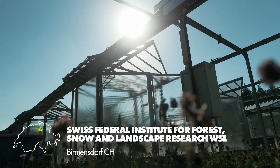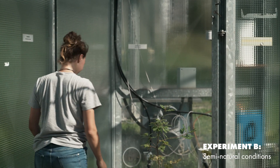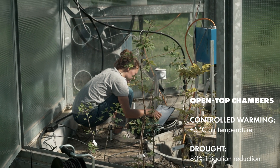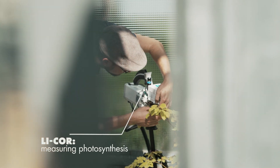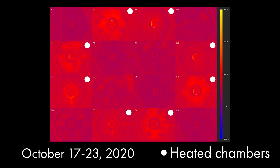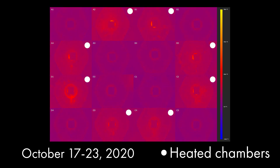At WSL, the scientists measure similar parameters in 16 open-top chambers. Here, they can't control VPD, but they simulate drought and expose young trees to chronic warming. These conditions correspond to levels predicted for the year 2100 under a business-as-usual scenario. They also monitor the temperature at the surface of the leaves with a thermal camera. In a hot and dry environment, leaves can reach temperatures up to 50 degrees Celsius. These extreme temperatures slow down the functions of trees, which can eventually lead to their death.